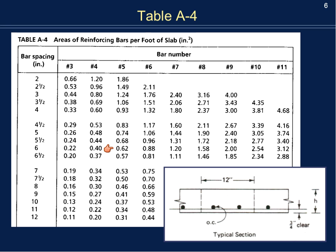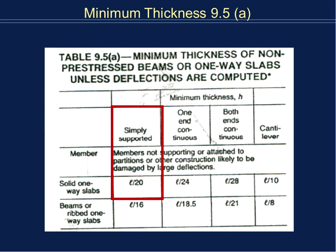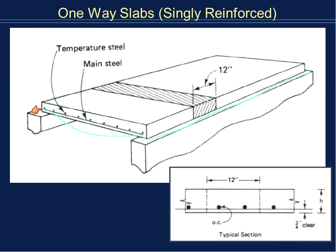There is also an ACI requirement that the minimum slab thickness H must be at least L divided by 20, where L is the span length in inches, not feet. So if your span is 10 feet — that's 120 inches — you divide by 16 to get your minimum thickness.